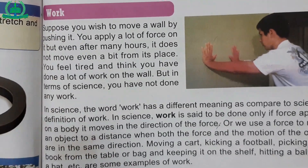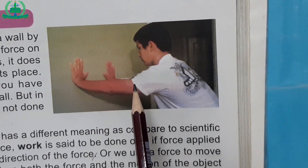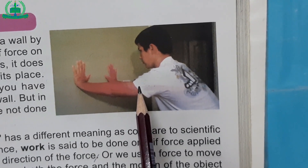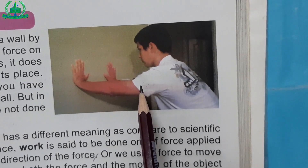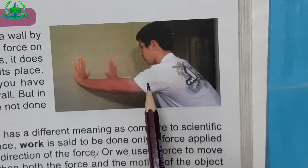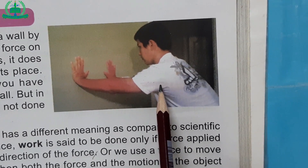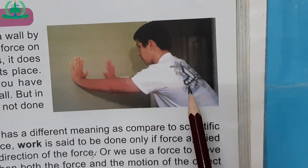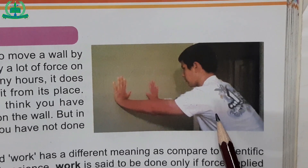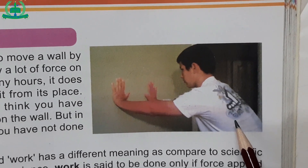Work. Suppose you wish to move a wall by pushing it. You apply a lot of force on it, but even after many hours, it does not move even a bit from its place. You feel tired and think you have done a lot of work on the wall. But in terms of science, you have not done any work. In science, the word work has a different meaning compared to everyday use. Work is said to be done only if a force applied on a body causes it to move in the direction of the force.